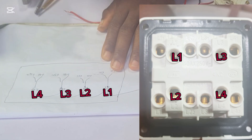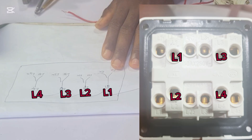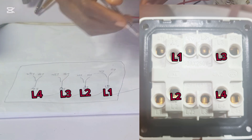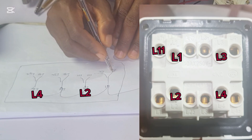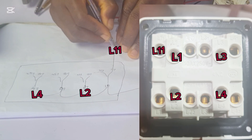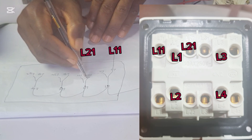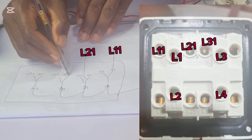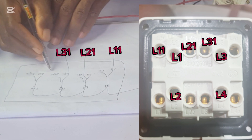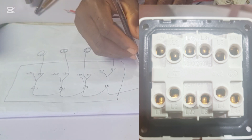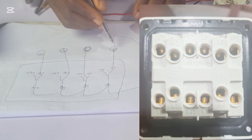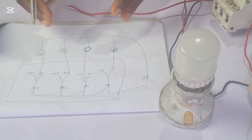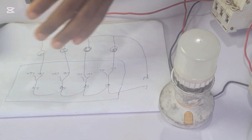After you connect your input live wire, you connect your bulbs: at L11 you connect your first bulb, at L21 you connect your second bulb, at L31 your third bulb, and at L41 your fourth bulb. Then you take your neutral wire and connect it to all of them. That's how it works — let's now do the actual connection.